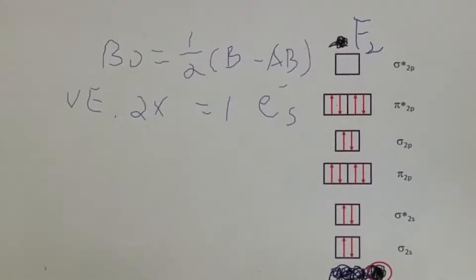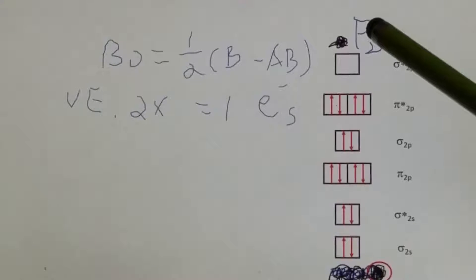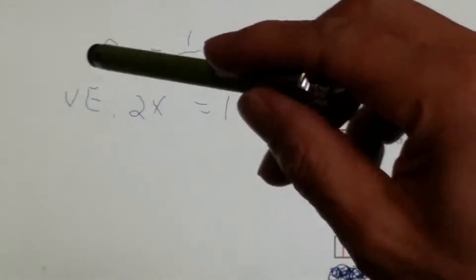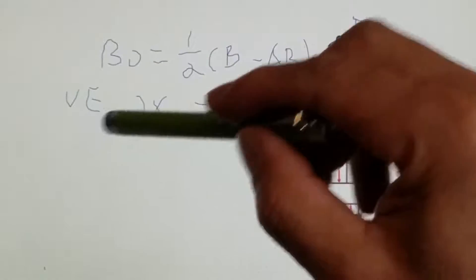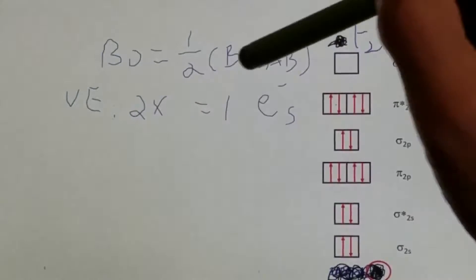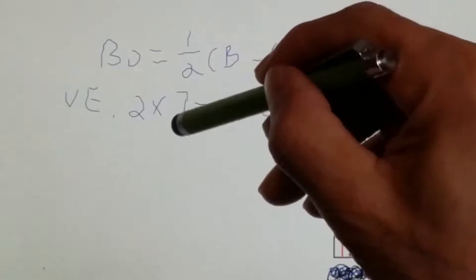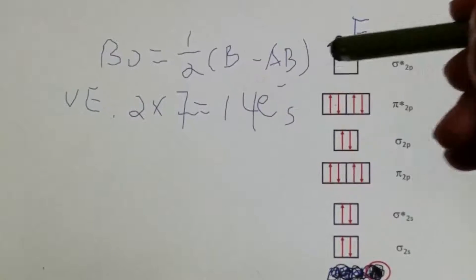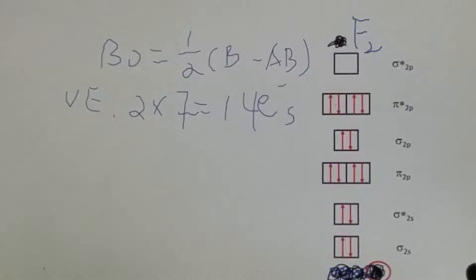Now let's take a look at fluorine. The total number of valence electrons for fluorine two, we have two fluorine, each carries seven valence electrons, and that should be 14 valence electrons.